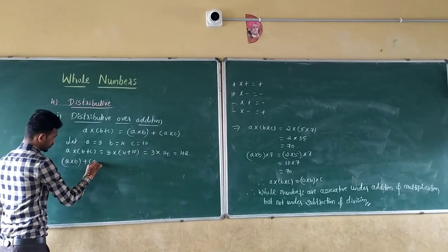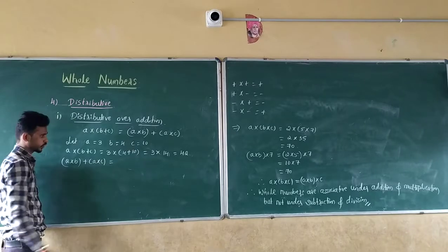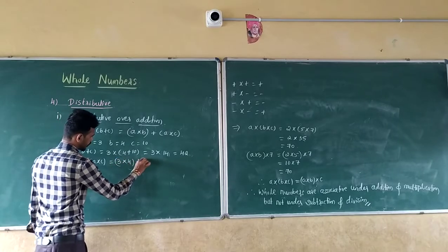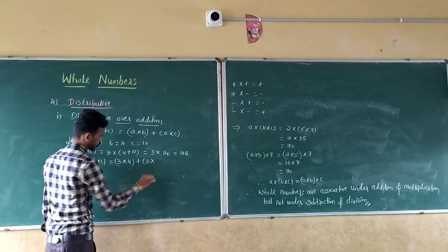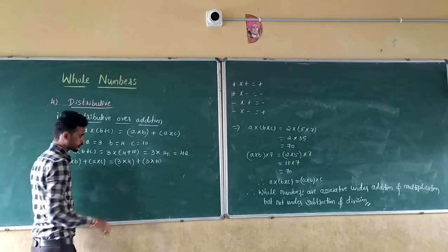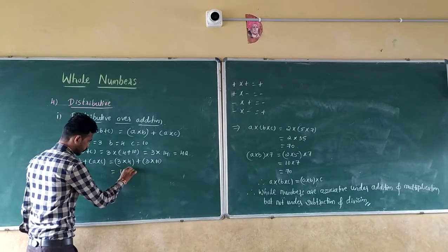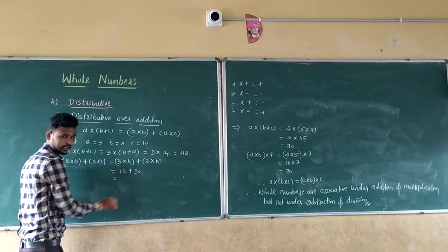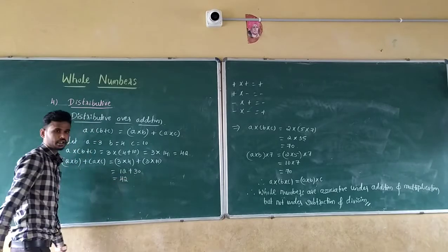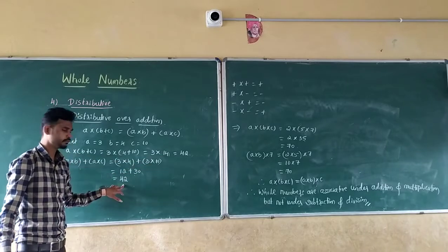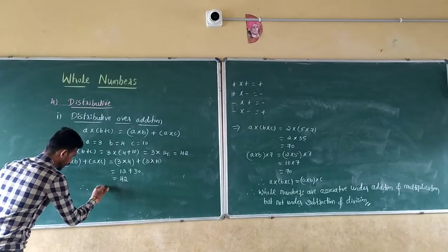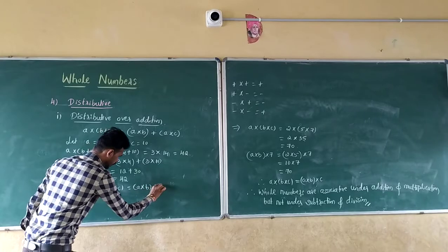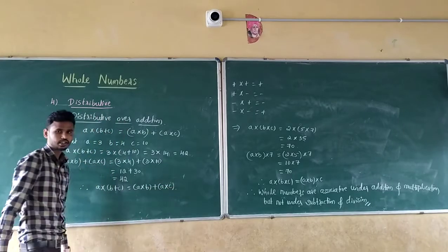Now check the right-hand side: A into B plus A into C, which is 3 into 4 plus 3 into 10. Three 4s are 12, plus three 10s are 30. So 12 plus 30 equals 42. Both answers are the same. Therefore, A into (B plus C) equals A into B plus A into C.